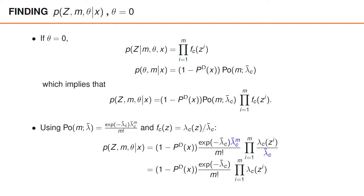The final expression may also look complicated, but you can recognize the first factor, 1 minus PD, as the probability that the object was not detected, and the remaining factors as the distribution of the clutter detections, evaluated for the matrix Ck being zk.